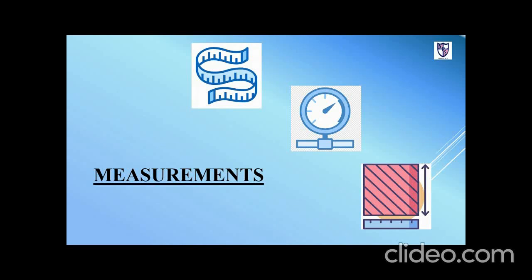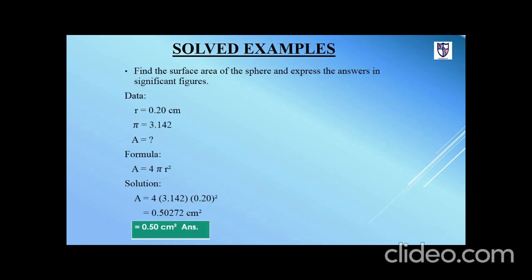Measurement. Find the surface area of the sphere and express the answer in significant figures. The formula for surface area is A equals four pi r squared. We are given the radius of the sphere, which is 0.20 centimeter, and the value of pi is the constant 3.142. Putting these values in, we get 0.50272.